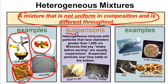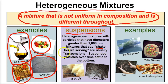One type of heterogeneous mixture is called a suspension. A suspension is a heterogeneous mixture with particles that have diameters greater than a thousand nanometers. Typically, these particles are suspended in another substance, and if left to sit for a while, they'll end up falling to the bottom. Usually mixtures that say 'shake before serving' are going to be examples of suspensions.